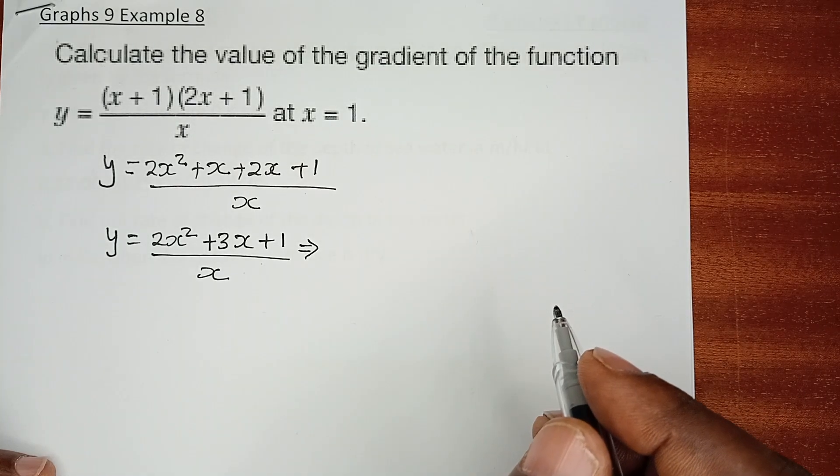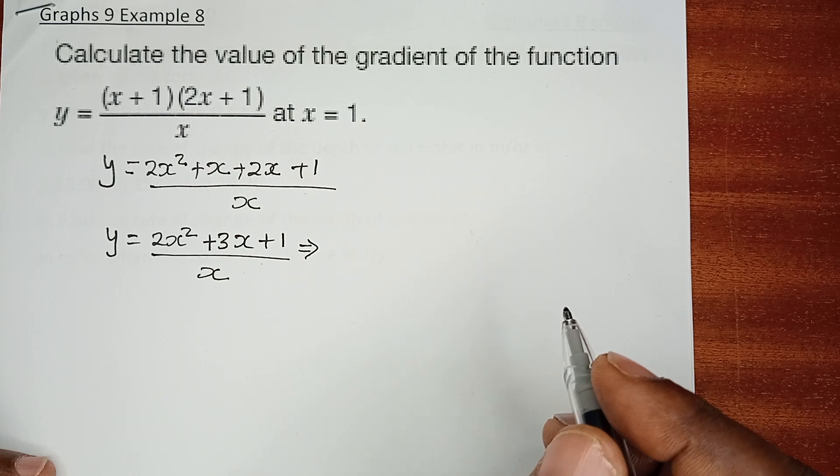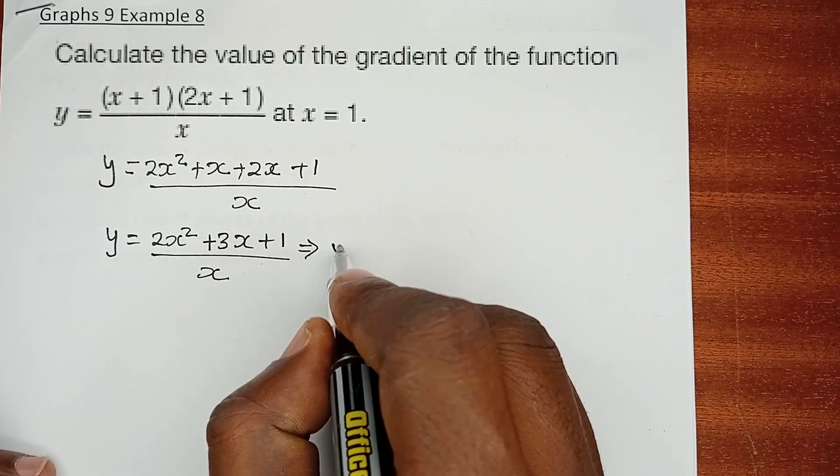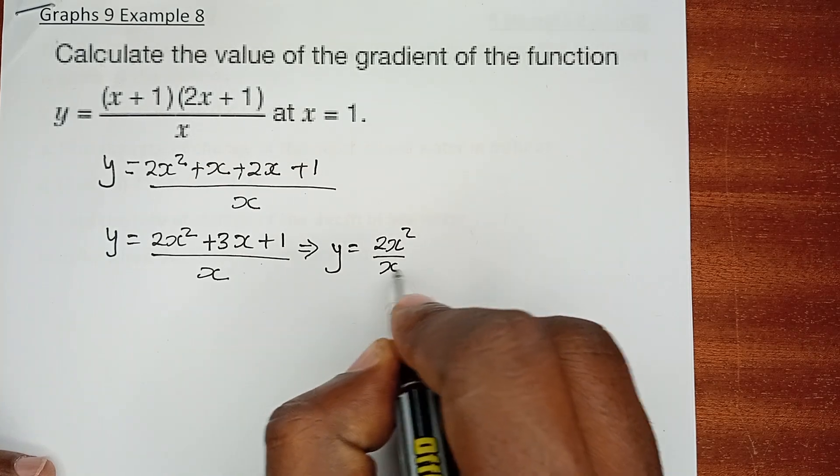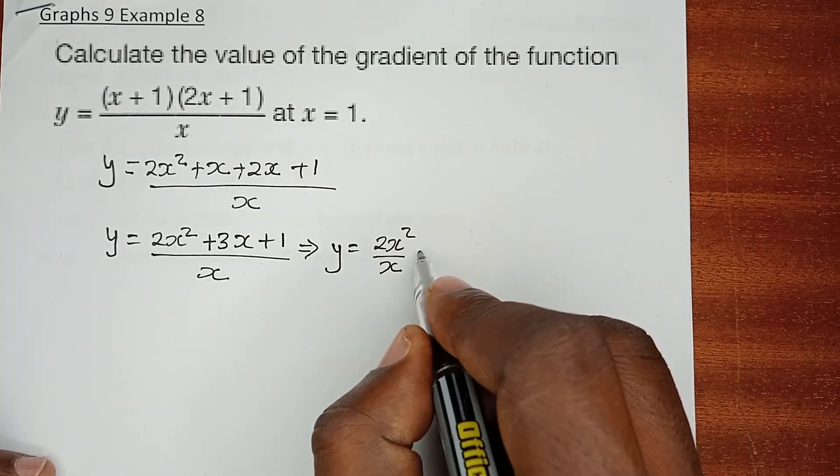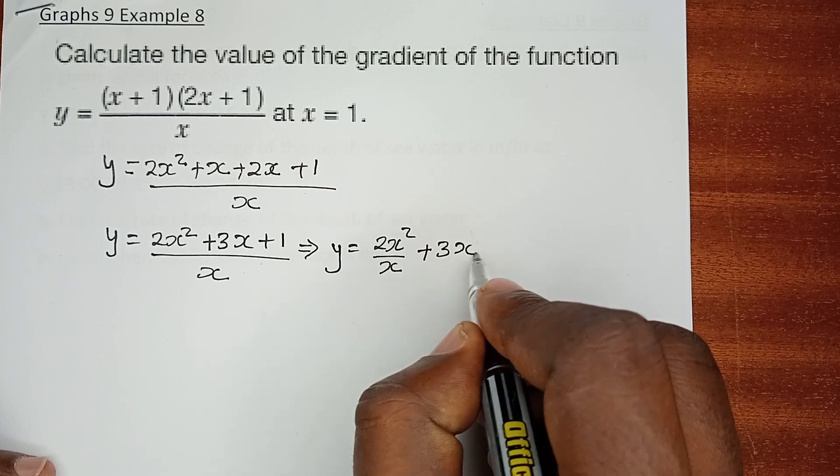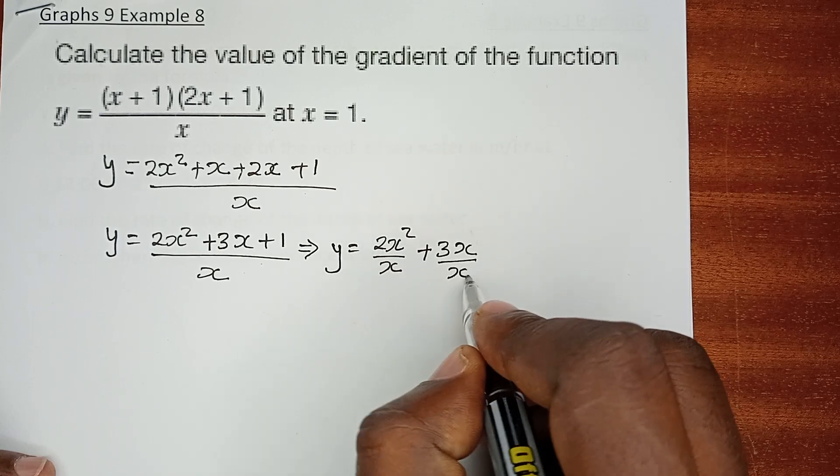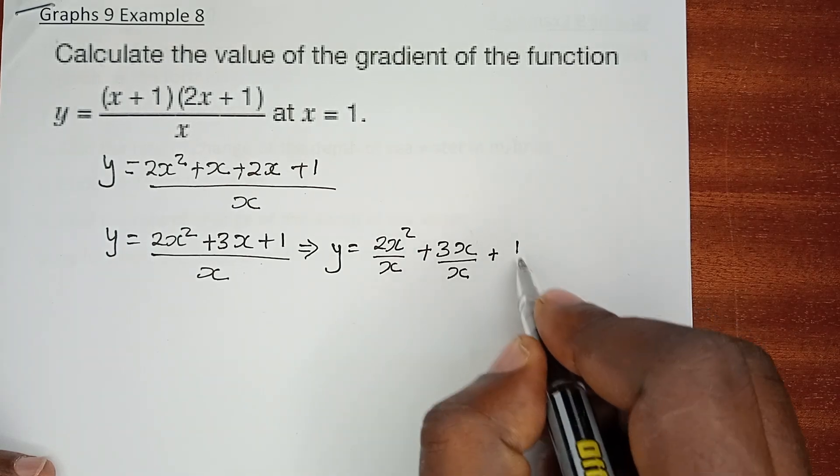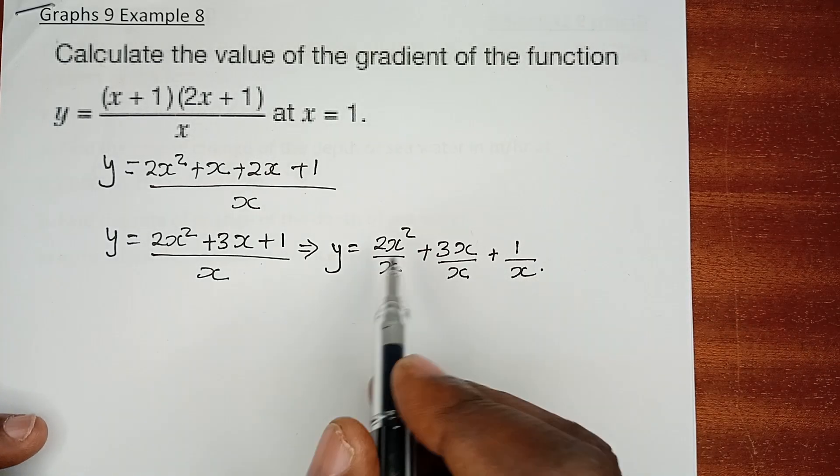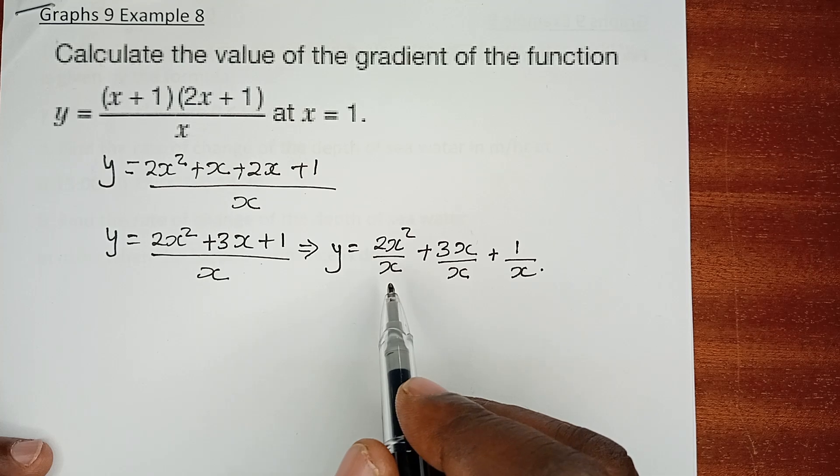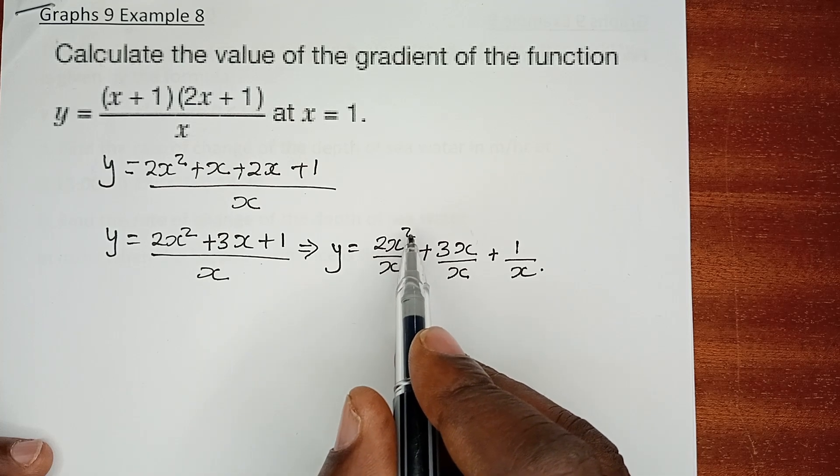Because they are all sharing the denominator, we now need to have each term independently and separated so that we can have y equals 2x squared over x plus 3x over x plus 1 over x.